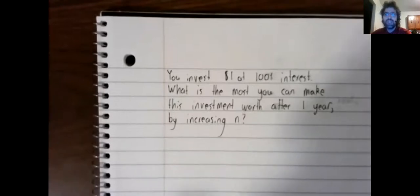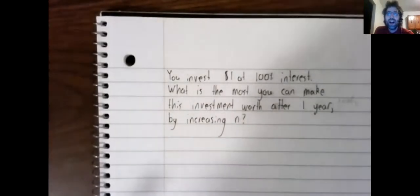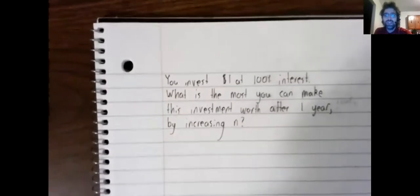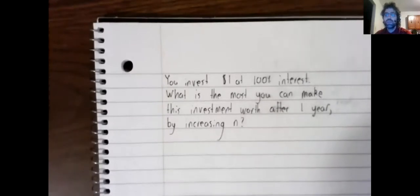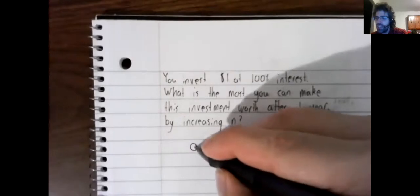But the way we go about it maybe has some kind of arbitrary elements to it. We are going to invest $1 at 100% interest, and we are going to let N, the number of times we compound that interest, be a variable that we can change. And we ask, how much can we make this $1 investment be worth at the end of the year?